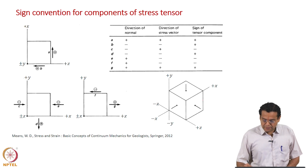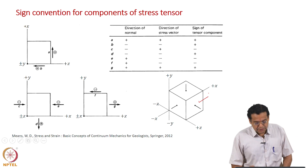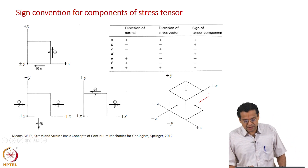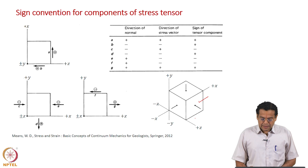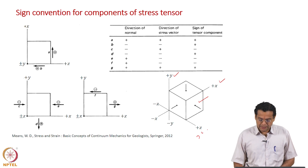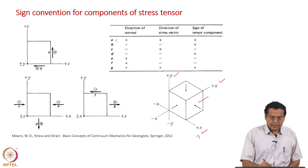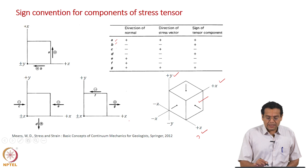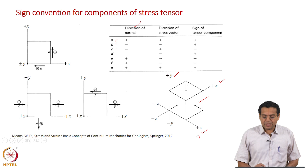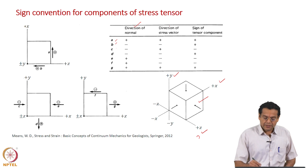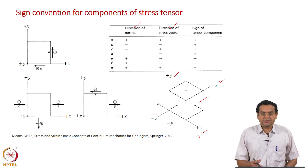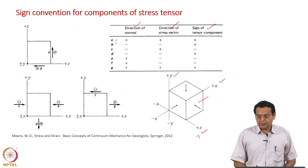Look, you have a stress element here with an x-axis, y-axis, and z-axis. We are considering several cases: A, B, C, D, etc. For each case we are going to discuss the direction of normal, the direction of the stress vector (and the component of the stress vector), and the sign of the tensor component.